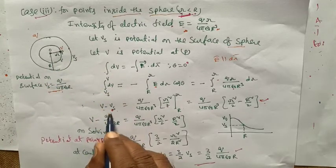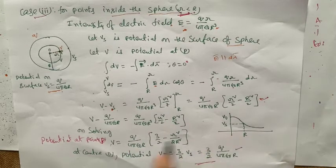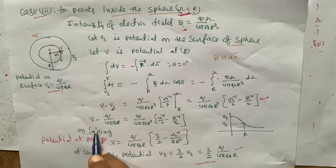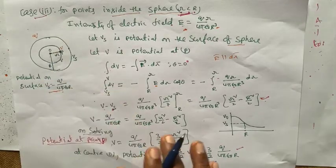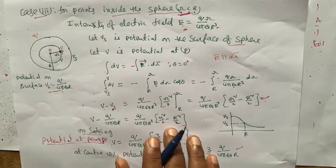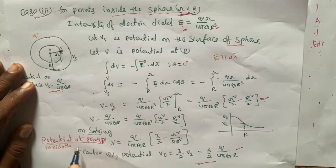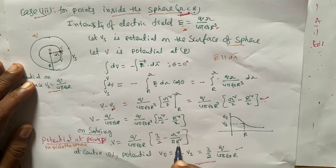Substituting the value of Vs and solving — the R terms cancel — the potential at point P inside the sphere is: V equals Q divided by 4 pi epsilon R, times (3/2 minus r squared divided by 2R squared).